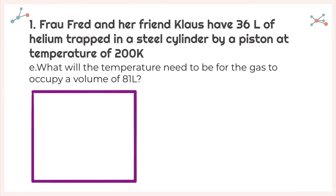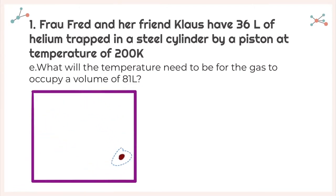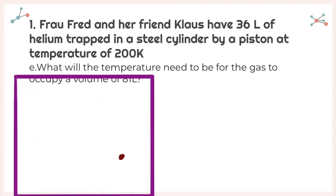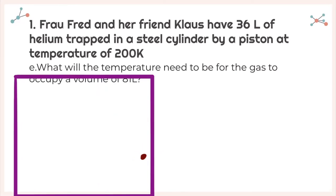Now it asks what's going to happen to my temperature if I increase my volume from 36 liters to 81 liters. If I add my particle, by increasing my volume I'm allowing for more collisions to happen. By increasing the number of collisions, that's going to increase my temperature — in this case by a factor of 2.25. So my new temperature would be 450 Kelvin.